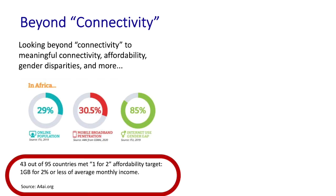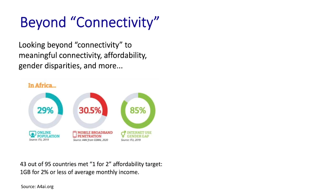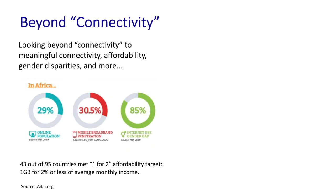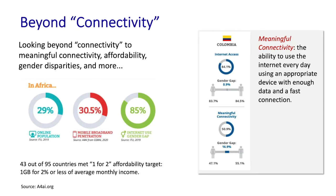For example, we could look into affordability. In 2020, 43 out of 95 countries — about half — met the so-called one-for-two affordability target: a gigabyte of data for 2% or less of the average monthly income. We could also look at gender disparities. In Africa, where internet and mobile access rates are still relatively low, the gender gap in connectivity is 85%. And we could dive even deeper into what we might call meaningful connectivity — the ability to use the internet every day using an appropriate device with enough data and a fast enough connection. The website a4ai.org, the Alliance for Affordable Internet, provides interesting worldwide statistics on internet affordability, meaningful connectivity, and gender gaps across the globe.